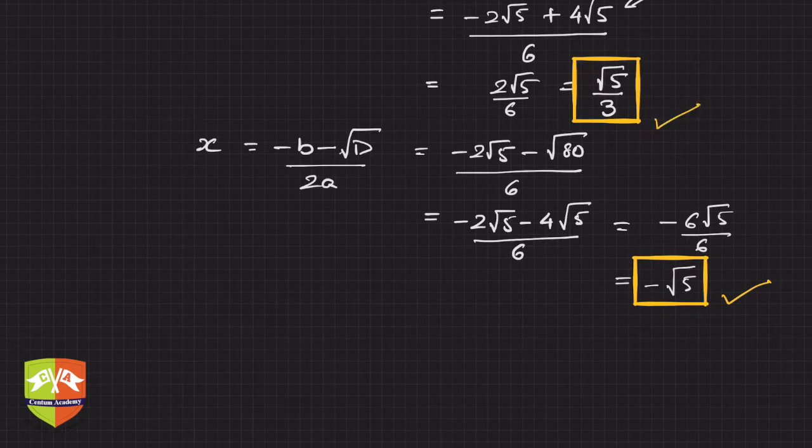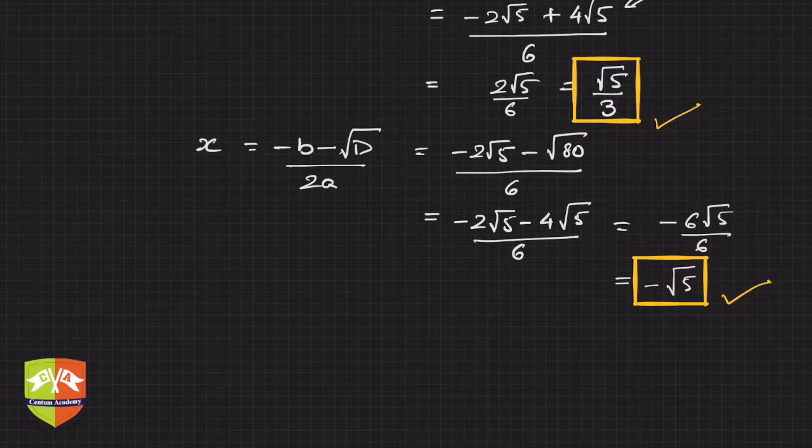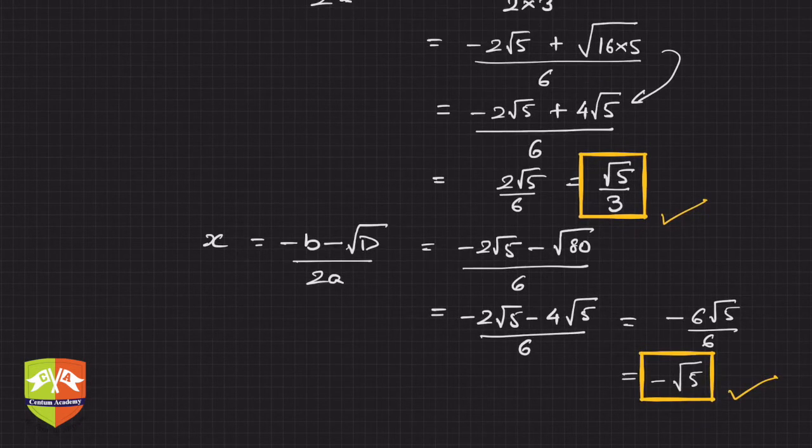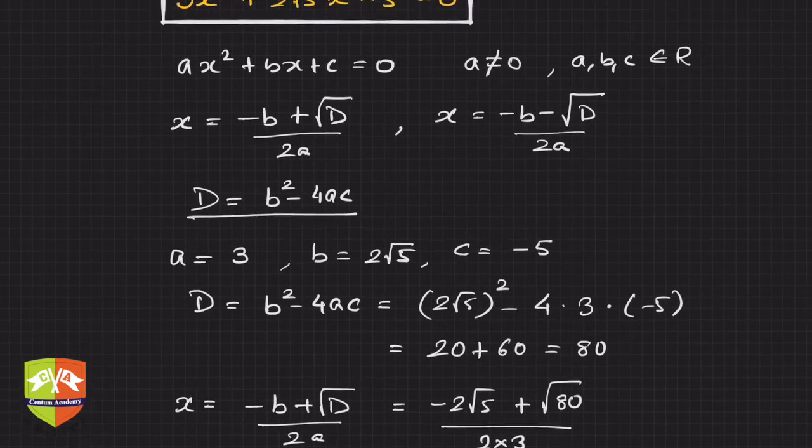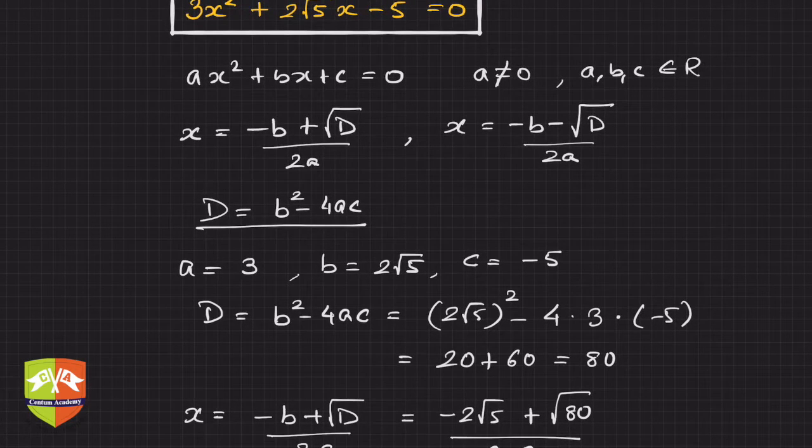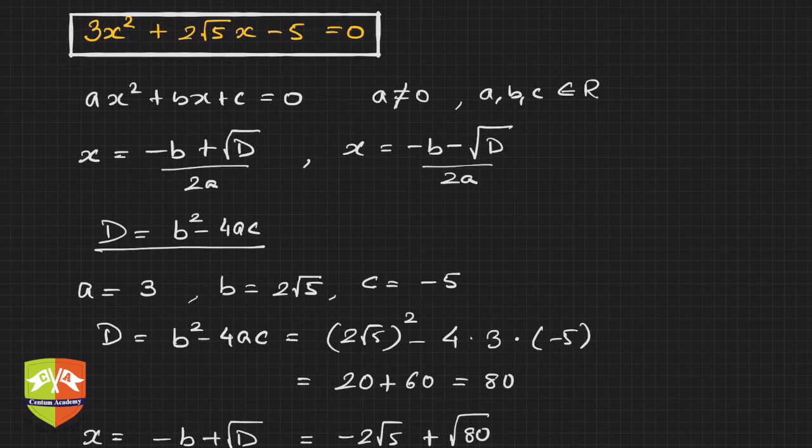We got two solutions: -√5 and √5/3. You can check whether the solutions are correct by plugging these values back into the equation.